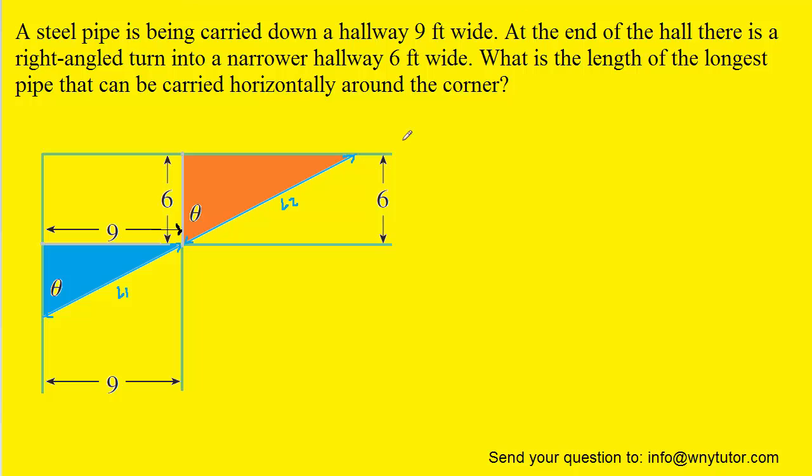Looking at the blue triangle, we could hopefully see that the sine of this angle theta right here would equal the opposite side, which is 9, over the hypotenuse, which is L1. So we could write that out. The sine of that angle is equal to the opposite over the hypotenuse.